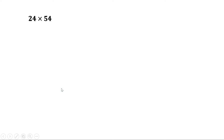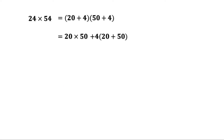Third problem: 24 into 54. This can be written as 20 plus 4 into 50 plus 4, which equals 20 into 50 plus 4 into 20 plus 50 plus 16. 20 into 50 is 1000. 20 plus 50 is 70. 70 into 4 is 280, plus 16.